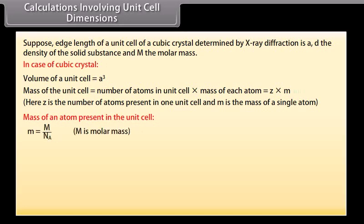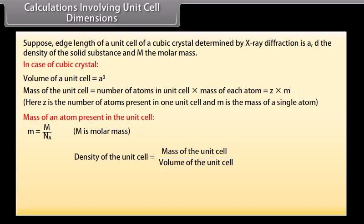m is equal to M upon N_A, where M is molar mass. Density of the unit cell is equal to mass of the unit cell upon volume of the unit cell. Therefore, which is equal to Z times M upon a cubed N_A. Or d is equal to Z times M upon a cubed N_A.